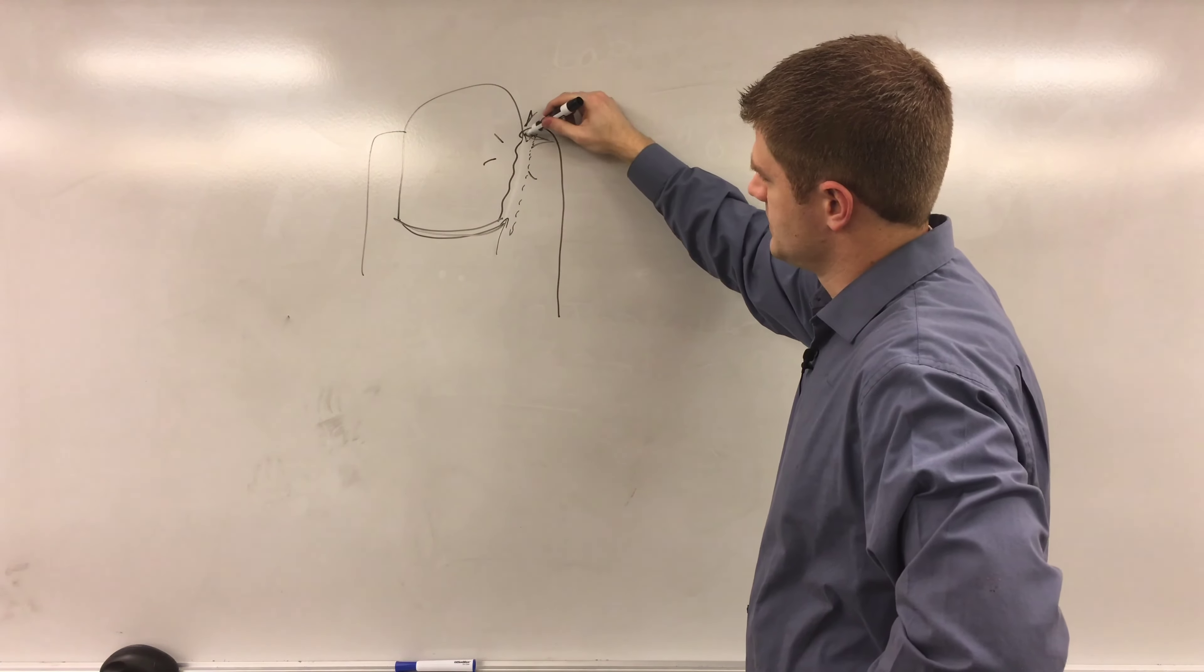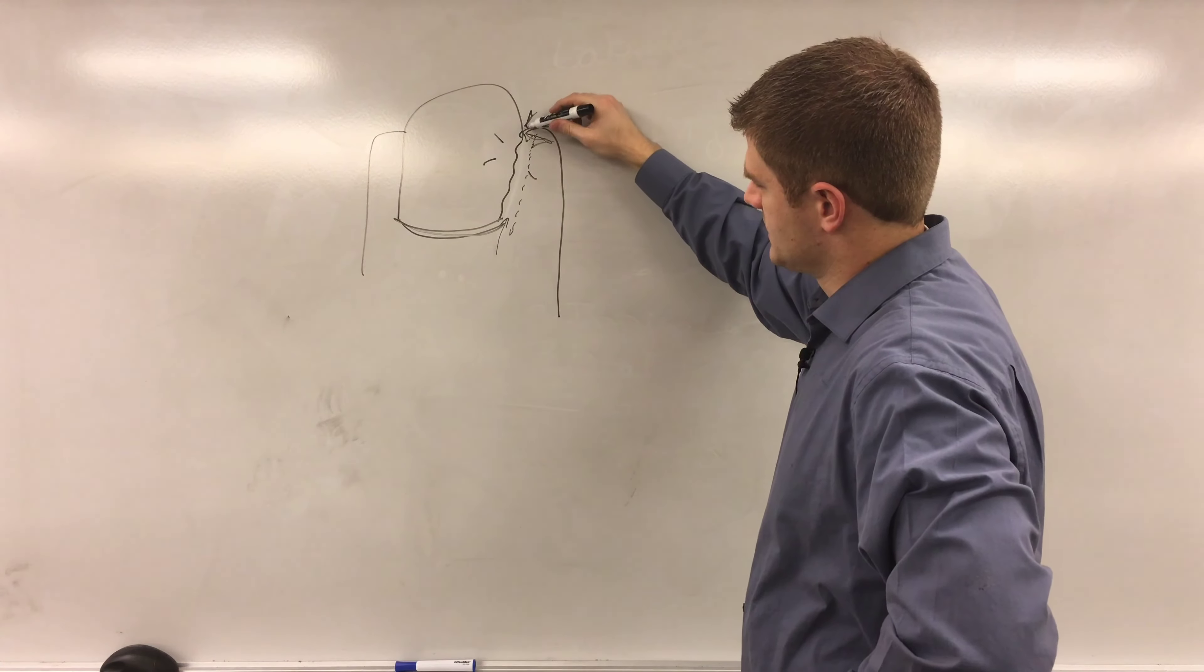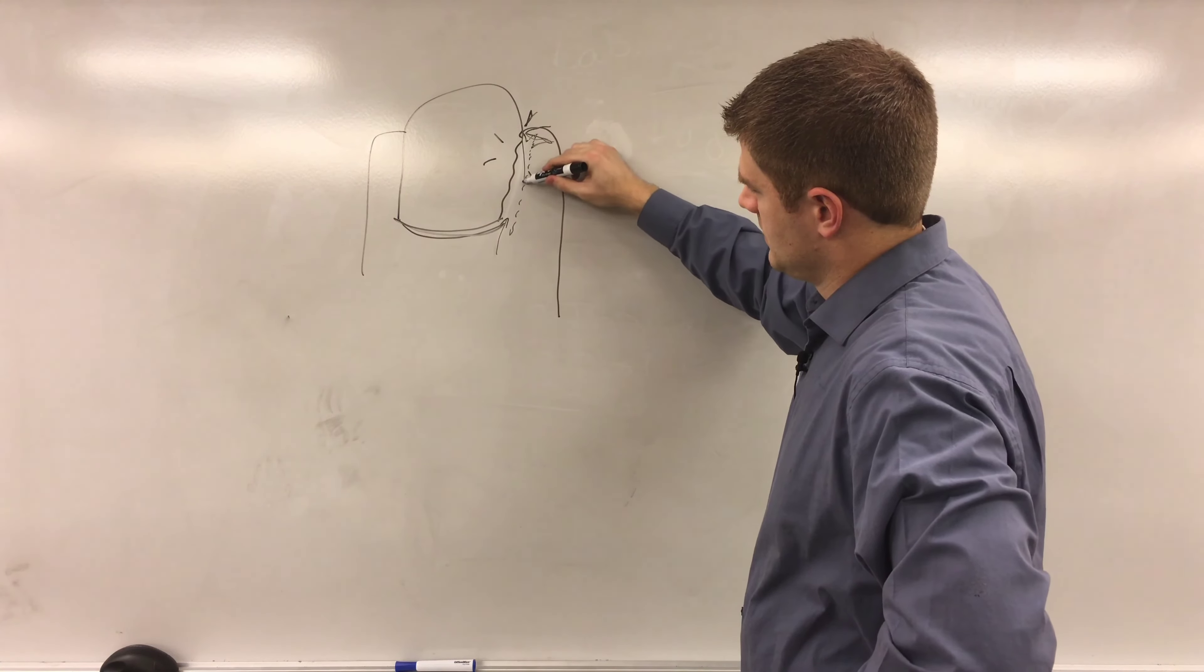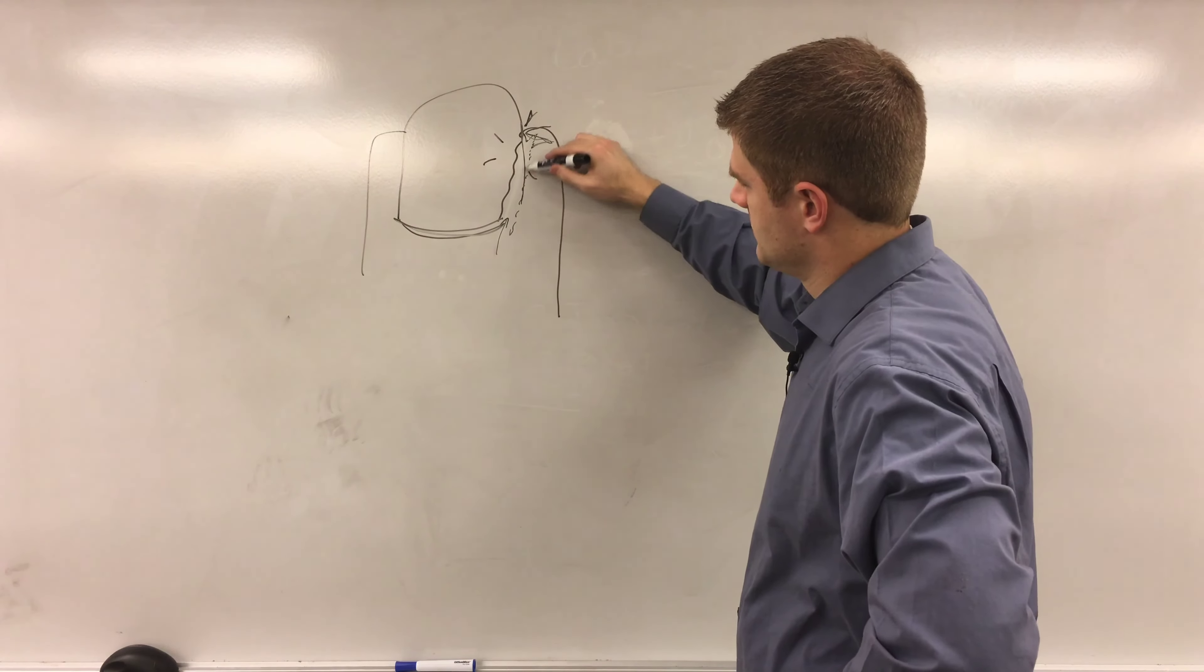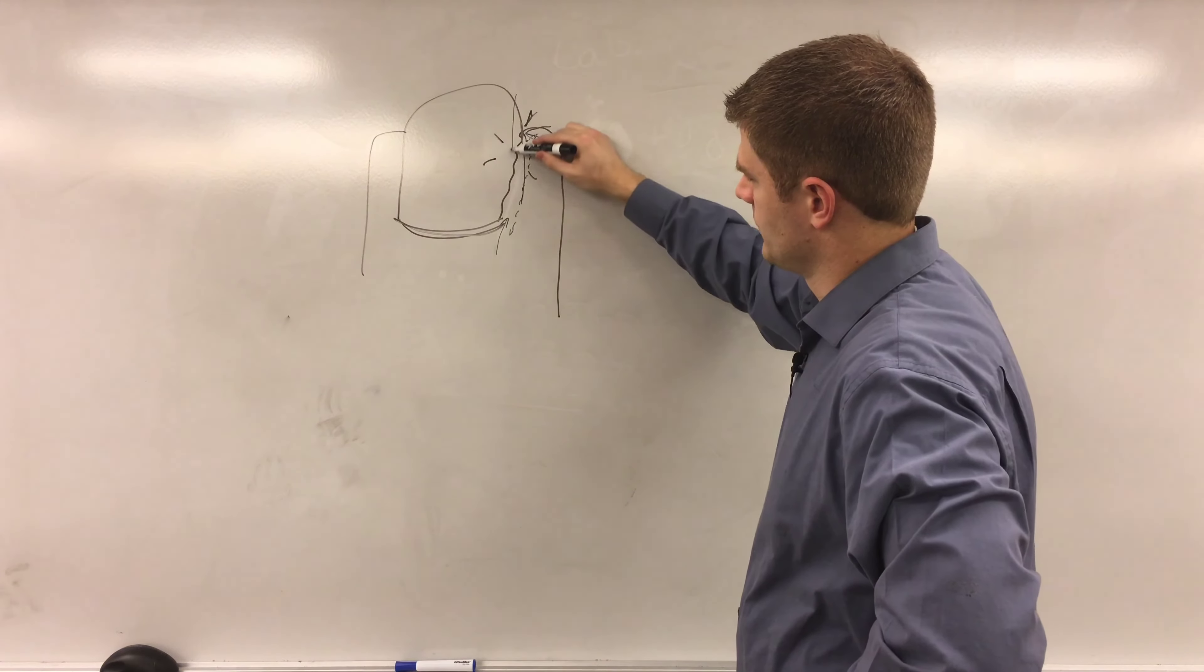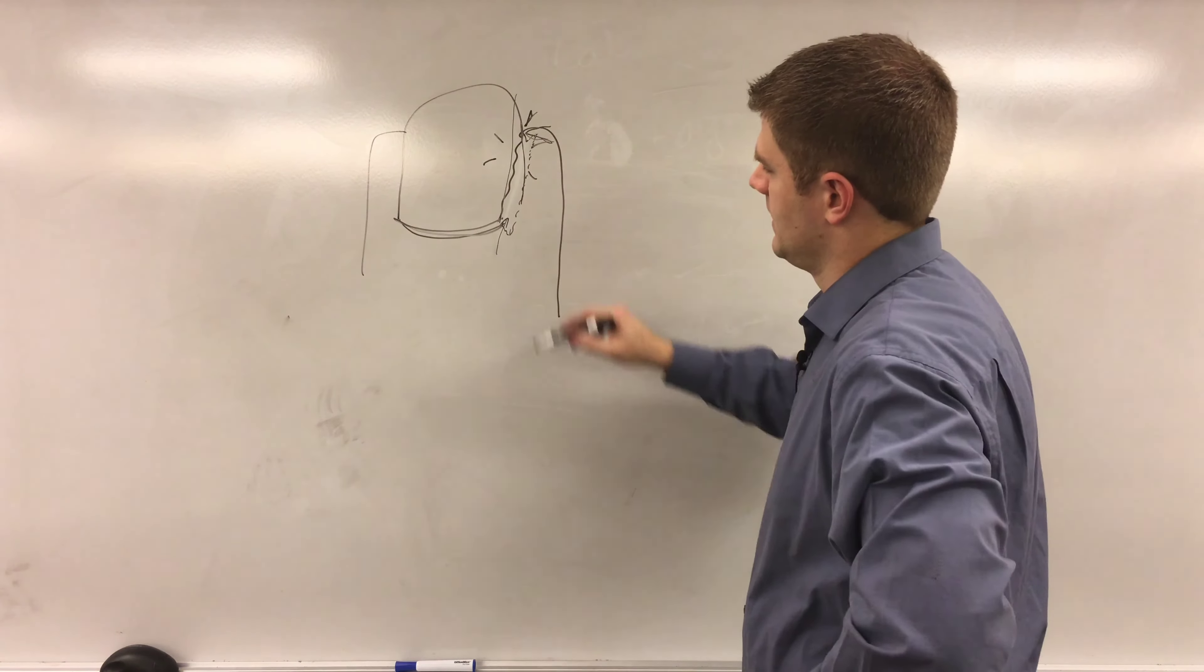And so what you can do is you can gently move the skin over and cut it flush, kind of like this, or even remove a larger portion of the nail and allow it to regrow.